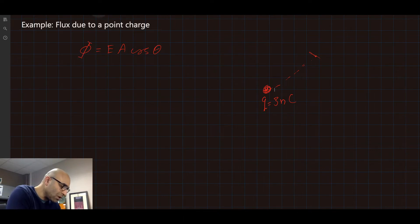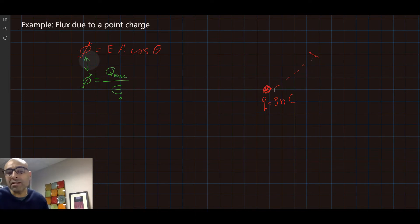A better approach is to use the flux is equal to Q enclosed divided by Epsilon zero because those two quantities are equal. Remember, that's from Gauss' law, that's what Gauss' law is about, he put the two together.